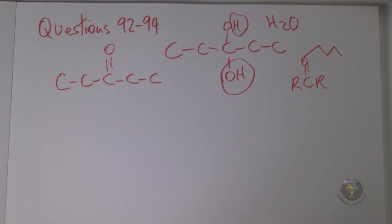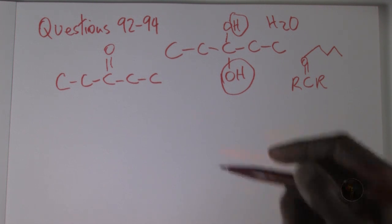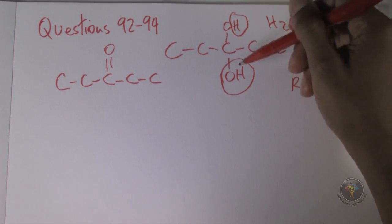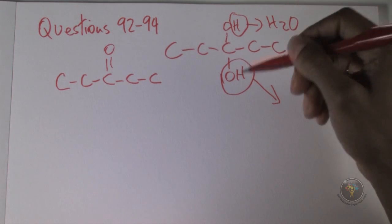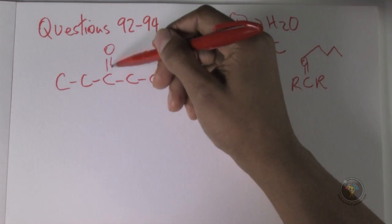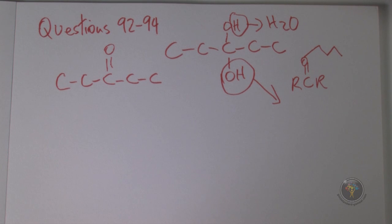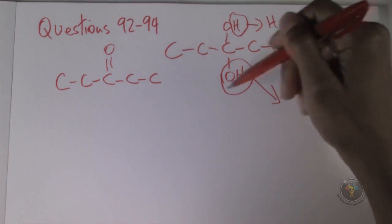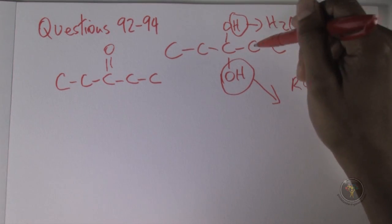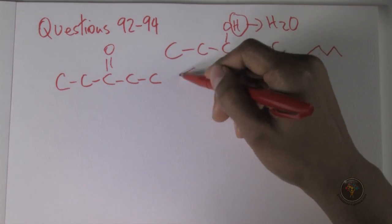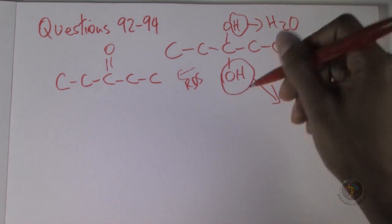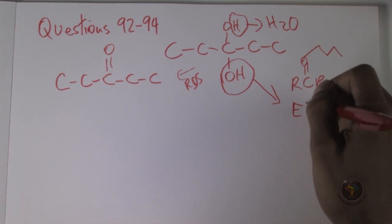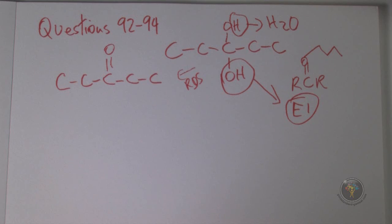By the way, this happened by elimination. We eliminated these atoms from the original compound, creating a double bond, and that's called elimination. Because it happened because of an internal rearrangement of this one molecule, this was the rate determining step (RDS). It only happened with one, so this would be called an E1 or elimination first order reaction.